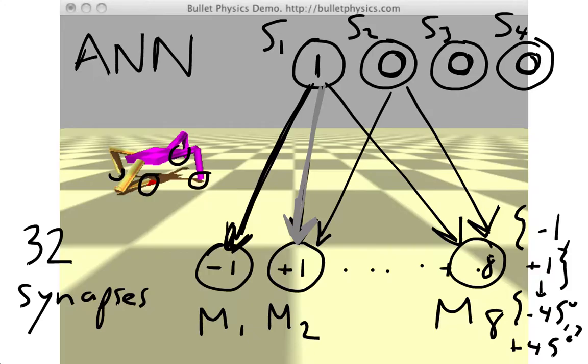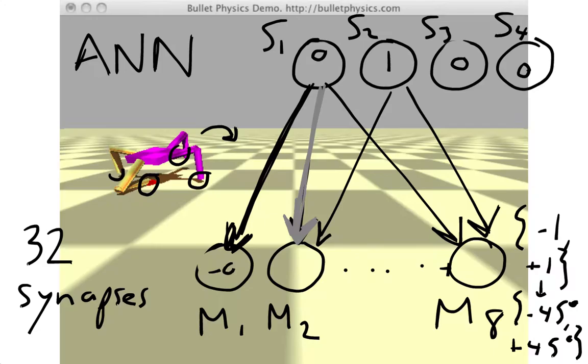So at every time step, we now have desired angles for each of our eight motors, and we're going to set those eight motors with those desired angles, which is going to cause the robot to move. This might cause the values of the sensor neurons to change, which will then in turn, when we update the neural network, cause the values of the motor neurons to change. This means the robot will move in a different way, which will cause it to obtain different sensor values, and so on.